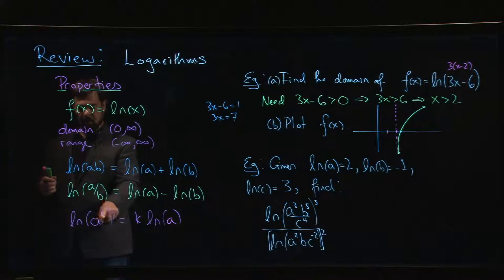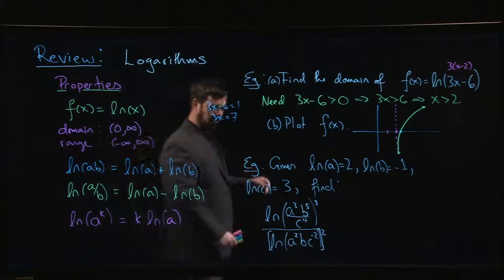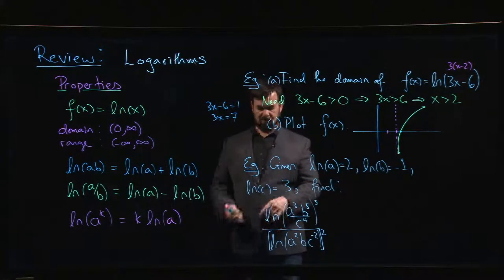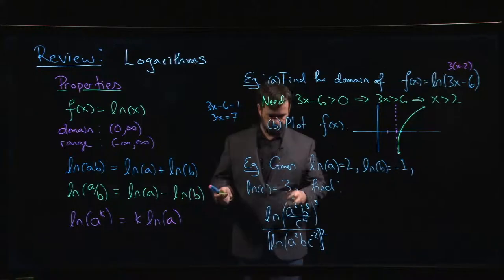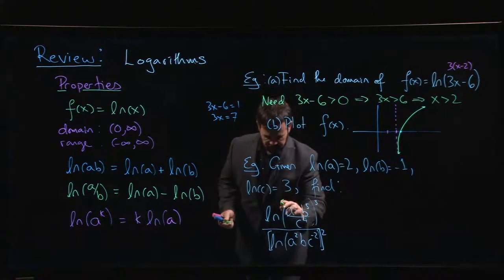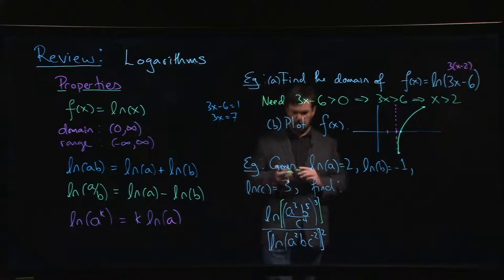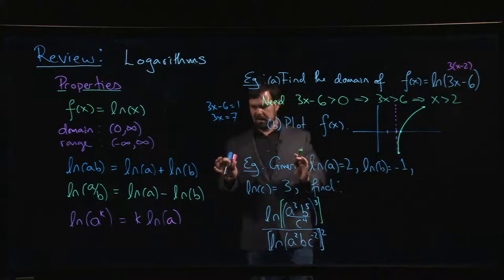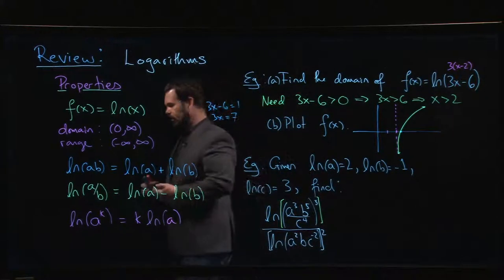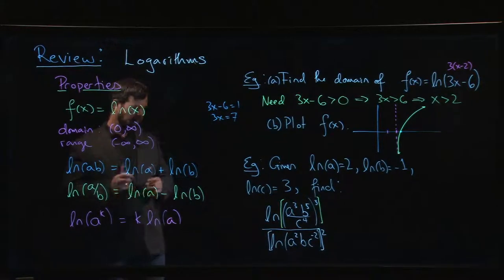This power rule here, log of a to the k, applies when the exponent is inside the logarithm, not outside. One of the problems is that we sometimes encounter ambiguous expressions like this. Now in this case, the intent is that that power is inside the log.